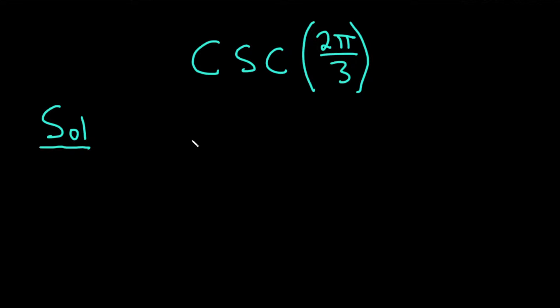The first thing you want to do is recall that the cosecant of x is equal to 1 over the sine of x.